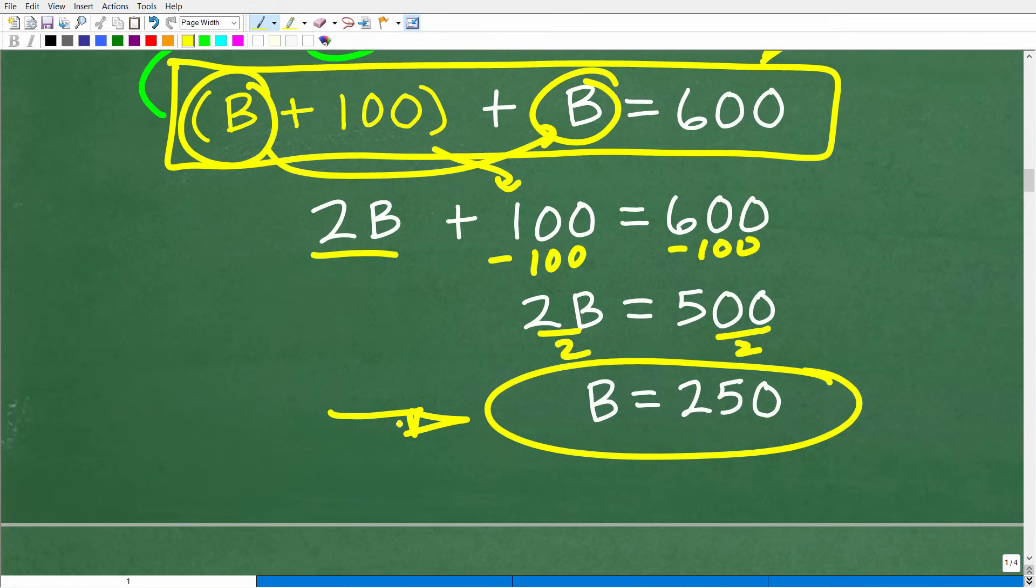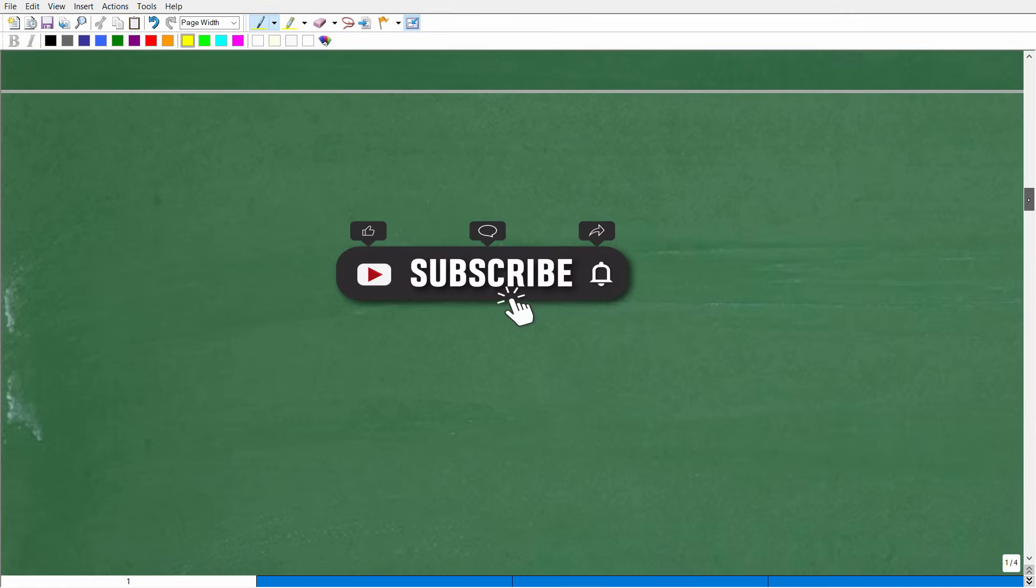Alright, so we are halfway there. Plane B has 250 seats and together they have 600 seats. You know it's pretty easy to see what we need to do to figure out the rest of the answer. Obviously we already have it, but let's go ahead and take that next step.